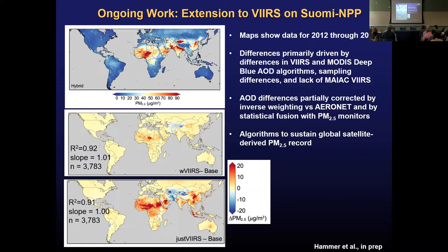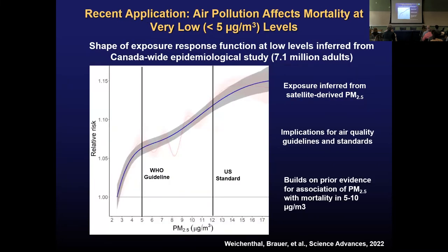The overall performance of that dataset with respect to ground-based measurements remains similar in quality — R-squared around 0.9 and a slope around 1. Excluding all Terra and Aqua data introduces larger differences. Most of that difference is driven by the exclusion of MAIAC as a retrieval algorithm. We believe that as MAIAC is added to the VIIRS data sets, these differences will diminish. Some residual differences occur from sampling characteristics between VIIRS and MODIS, as well as differences in the Deep Blue algorithm implementation. Overall performance versus ground-based PM2.5 measurements remains very high, indicating an algorithm in place to sustain the record as we transition away from Terra and Aqua to VIIRS.